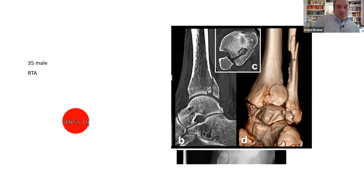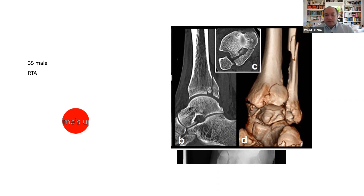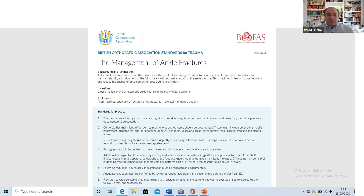I think you did well — this should be a fairly straightforward viva and you just described what you would usually do. When it came to the technicalities, you had a clear plan and addressed the posterolateral approach well. It's fine that there wasn't time for the full approach; in exams, if you've reached that point it probably means you're scoring a seven or an eight.